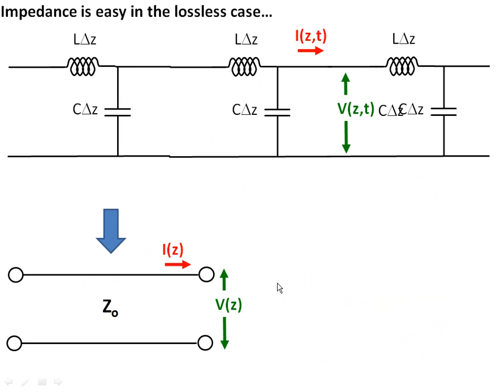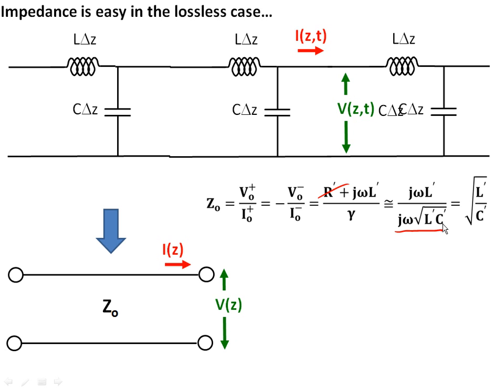It turns out that impedance is really easy in the lossless case. This is our representation. We've gotten rid of our resistance of the wires and the conductance of the insulator. When you do this and substitute it in, essentially R equals zero and G equals zero and gamma, you come up with an approximation like this for the lossless case. The impedance is just the square root of the inductance per unit length divided by the capacitance per unit length, given by this equation right here. This is one of those things you really need to memorize for transmission lines, because this is one of the two major parameters which describes transmission lines.